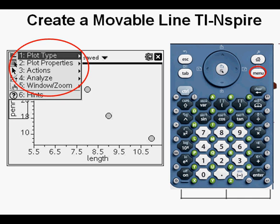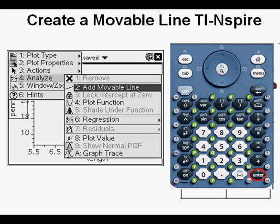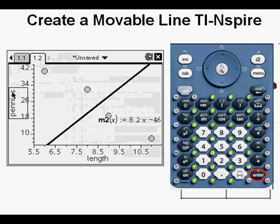We're going to scroll down to 4, analyze. Press ENTER. We see the movable line option highlighted. Press ENTER again.